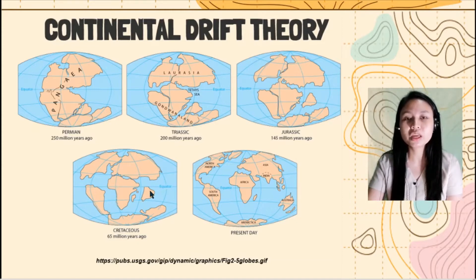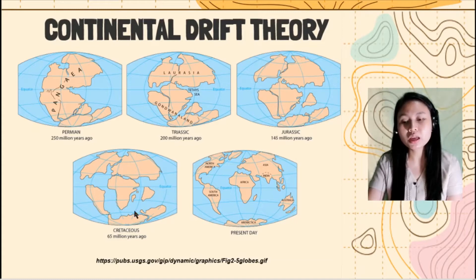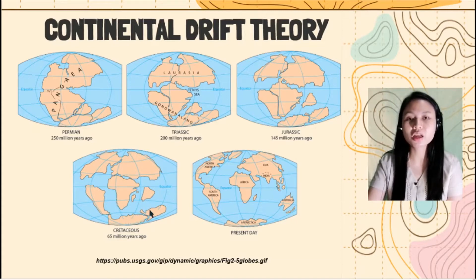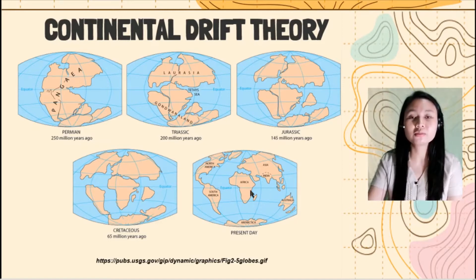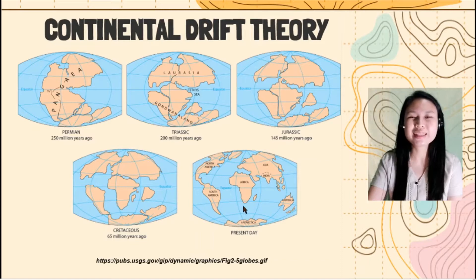India also continually drifted from Antarctica and Australia. And then we have the present day, where we have our seven continents.